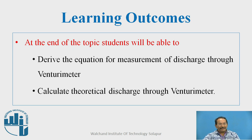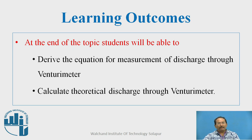But the modified equation says there are some losses, so the losses are added on the right-hand side. The pressure energy, static energy, and kinetic energy equals the pressure energy, static energy, and kinetic energy plus losses at the second section. The important applications include venturimeter, rotameter, orifice meter, mouthpieces, etc.